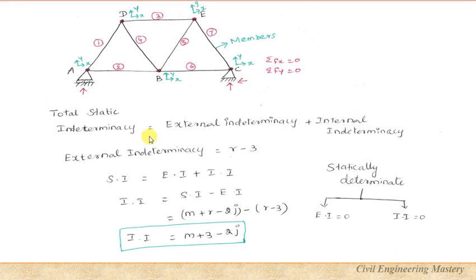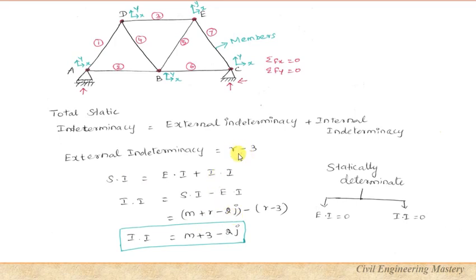Total static indeterminacy equals external indeterminacy plus internal indeterminacy. The structure is statically determinate when both are zero. External indeterminacy equals r − 3. Since static indeterminacy = m + r − 2j and external indeterminacy = r − 3, internal indeterminacy = static indeterminacy − external indeterminacy, which gives: internal indeterminacy = m + 3 − 2j.